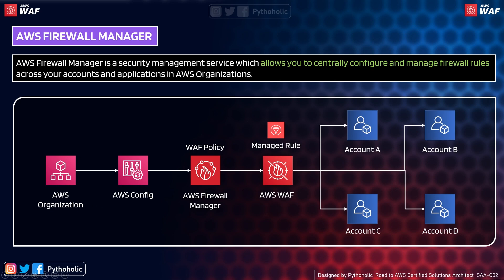Here, we have AWS Organizations, and the configurations for all resources come from AWS Config, from which Firewall Manager detects any new or existing resources. The WAF policy is provided to the managed rule set for the WAF — the web application firewall — and this is just one firewall. There can be hundreds of firewalls within the Firewall Manager, and these managed rules propagate across accounts. There can also be multiple firewalls acting under a single Firewall Manager under a single account.